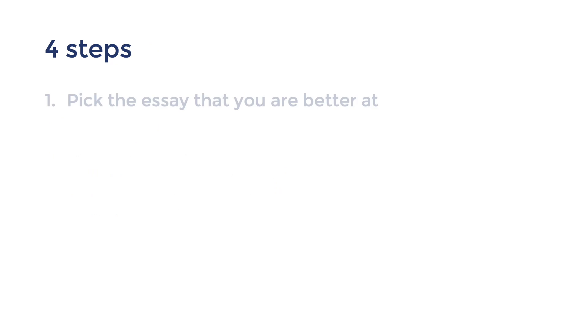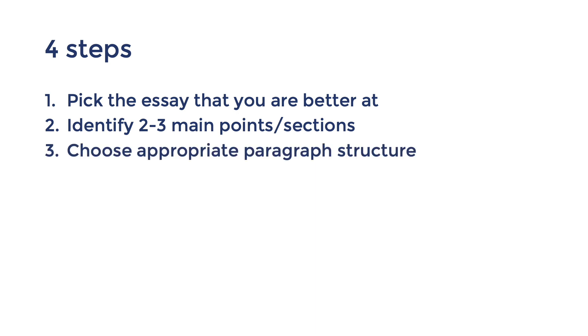So in summary, step one is to pick the essay option that you're better at, the one that you know the most economic concepts, relationships, examples, and statistics. Take note of the directive verb that is being used as well. Step two is to identify two to three, maybe even four main points or sections for your essay. Again, choose points that you know the most concepts, relationships, examples, and stats. Step three, choose the paragraph structure that suits you and the question. Step four, write according to the plan. Keep an eye on time. If you have time remaining, consider a fourth section. Otherwise, just go over your essay to correct any mistakes.